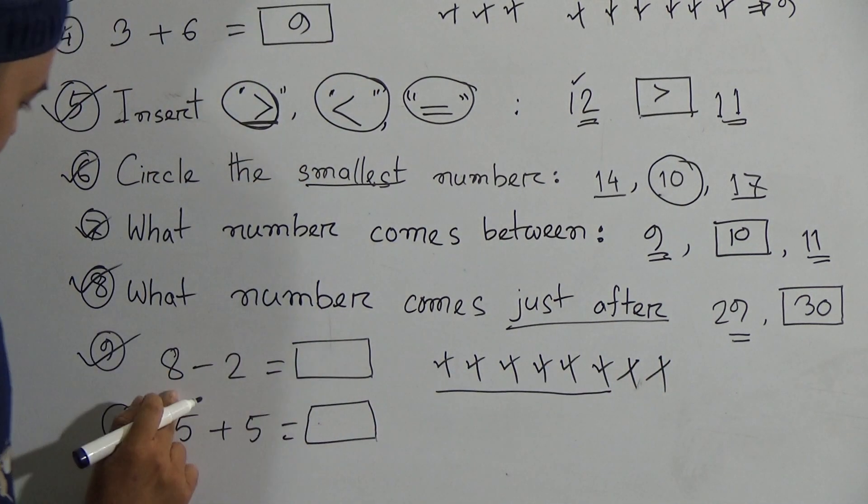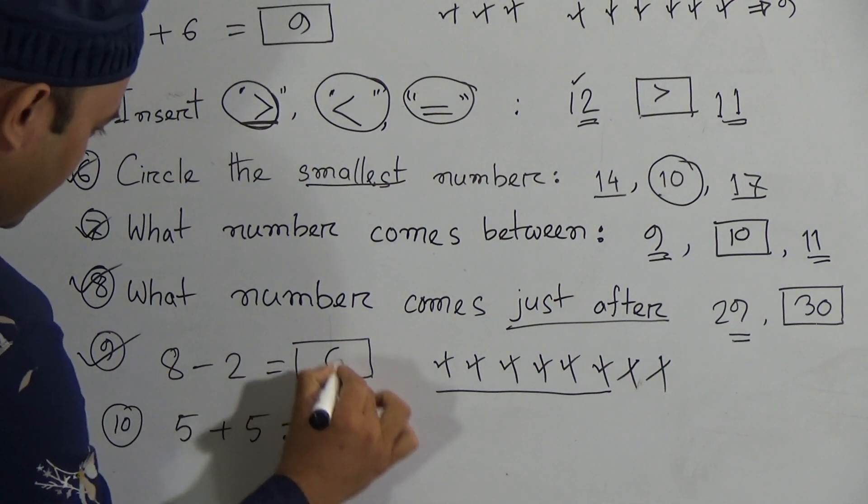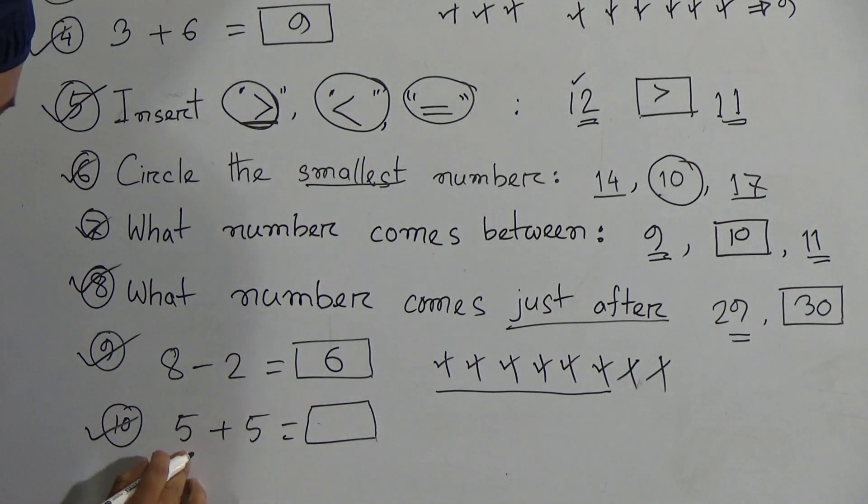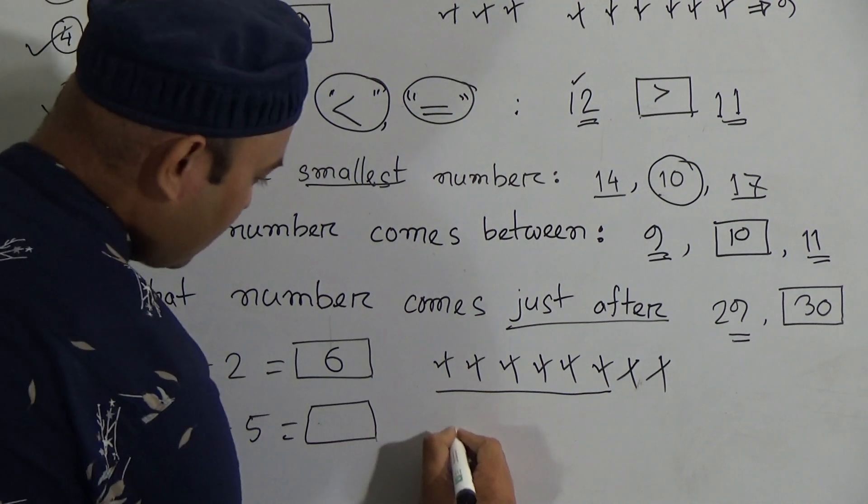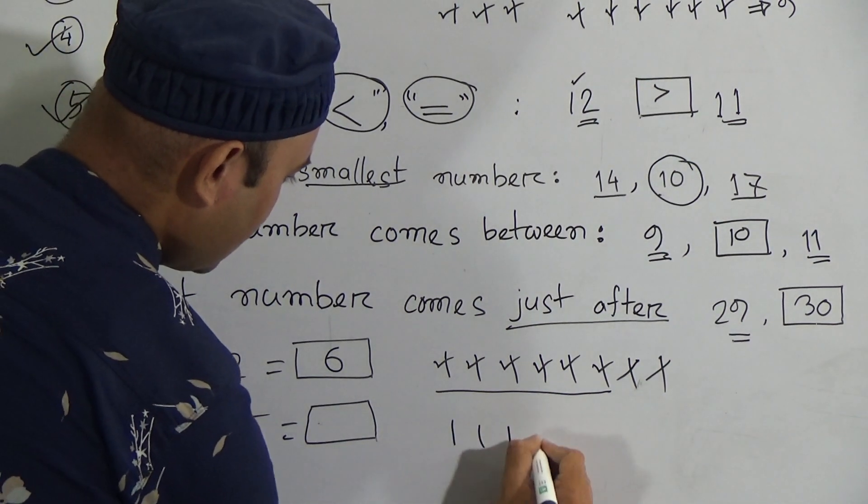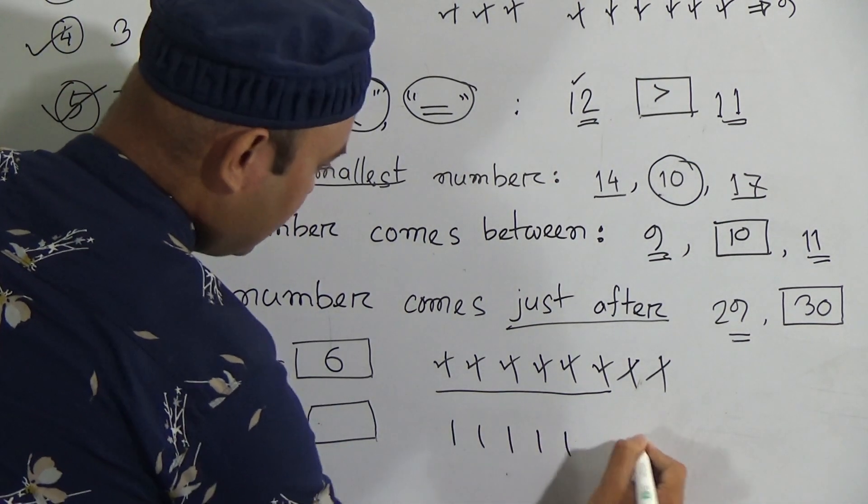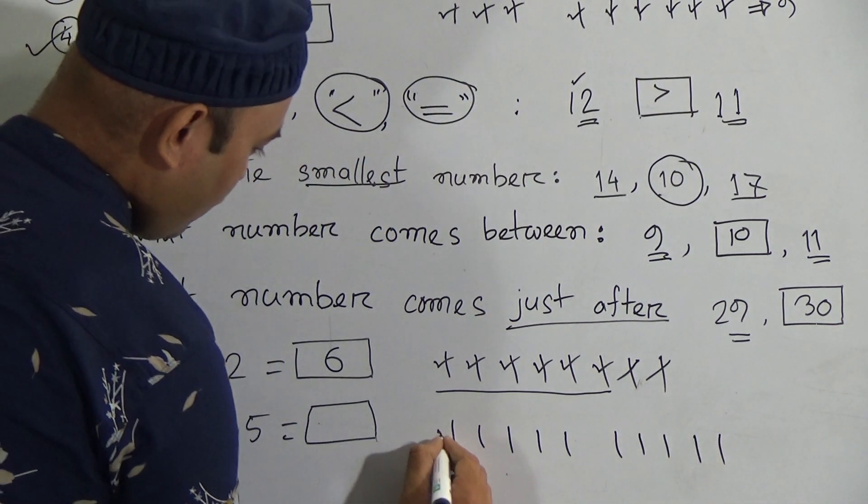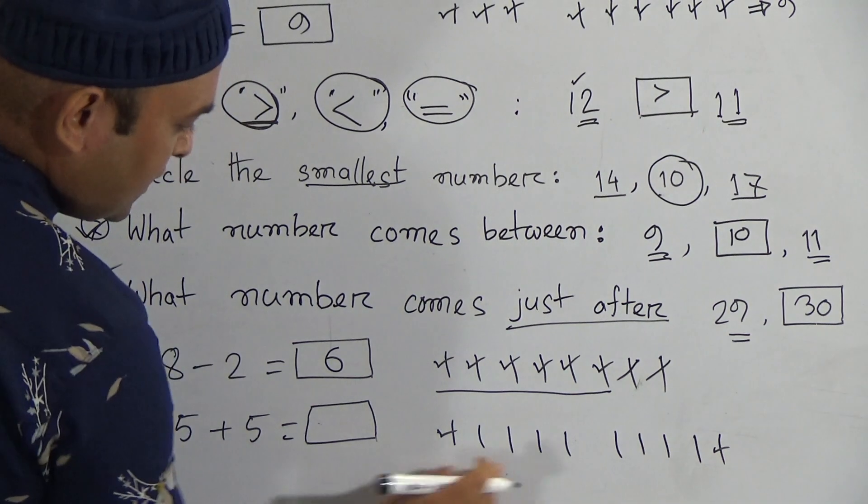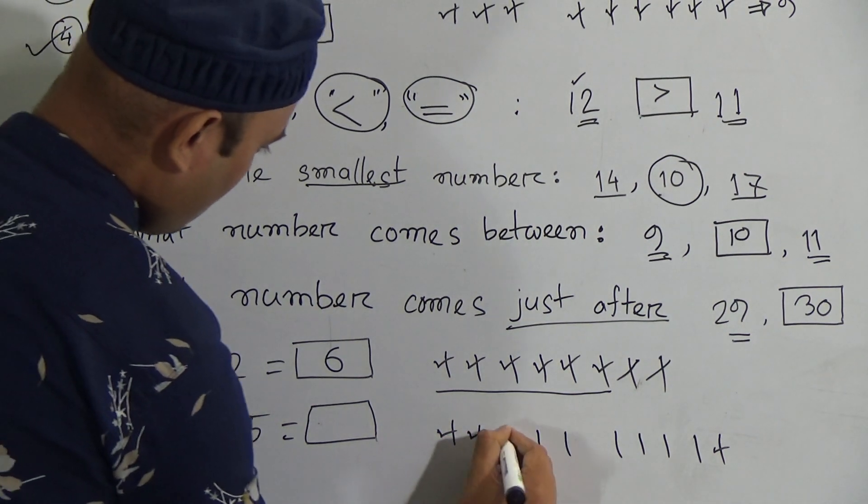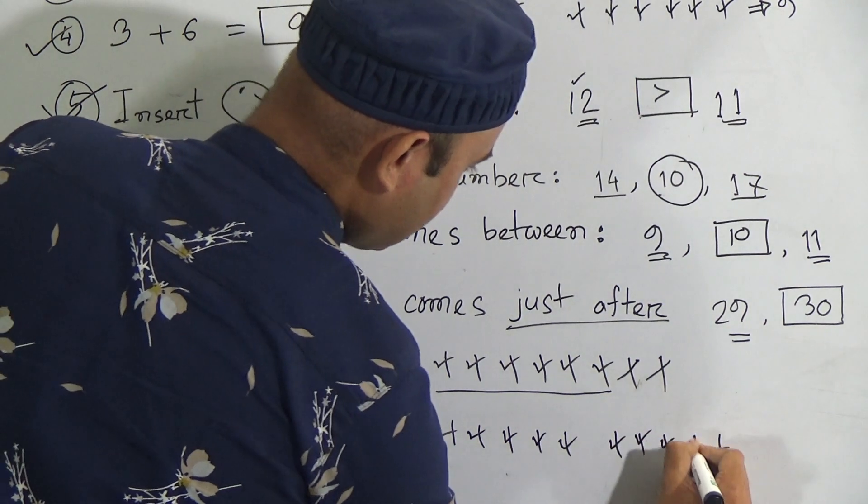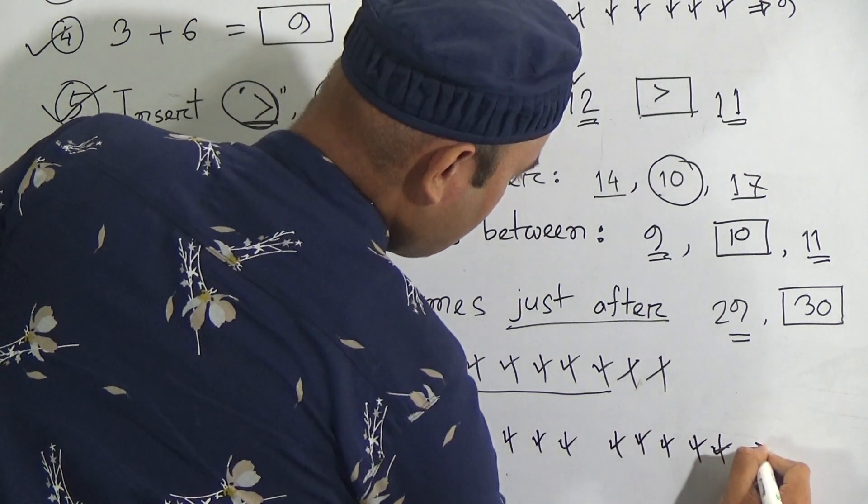So 8 minus 2, it will be 6. Then the last one, it will be 5 plus 5. There are 5 sticks: 1, 2, 3, 4, 5. Then 1, 2, 3, 4, 5. Then count from start to finishing point: it will be 1, 2, 3, 4, 5, 6, 7, 8, 9.